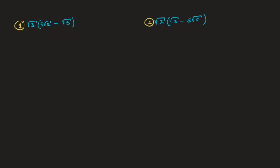In this video I work through two examples in which I distribute a square root or a cube root across a pair of parentheses. Let's get started with the first example. We need to distribute and simplify if possible the square root of 3 times 5 times the square root of 2 plus the square root of 3.